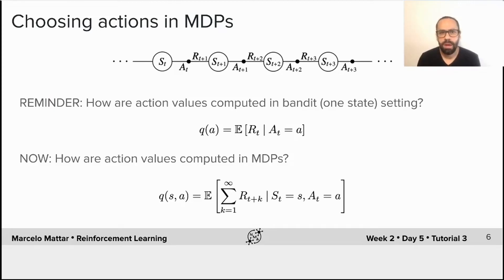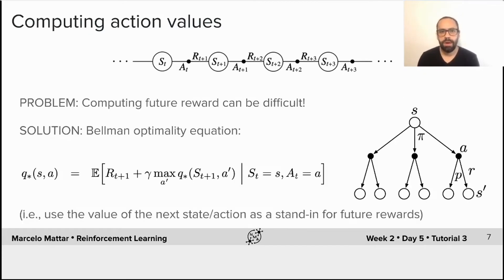So instead, what the agent needs to estimate in an MDP is the sum of future rewards that it expects to receive if an action is selected. Now notice that this function Q(S,A) also depends on the state, and that's because the same action can have different values depending on the state that it is executed.